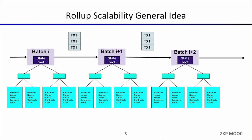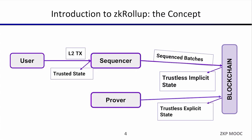Let's see how a real ZK EVM works in the case of Polygon ZKVM. If you are a user and want to send transactions to the blockchain, instead of broadcasting in a peer-to-peer network you send them to a sequencer. If the sequencer is centralized, you send transactions directly to it. The sequencer includes these transactions in blocks quite fast, and returns the new block with your transaction. This gives you what we call a trusted state — because it is centralized, you need to trust the sequencer.